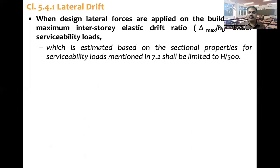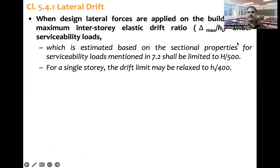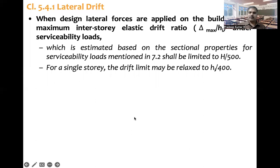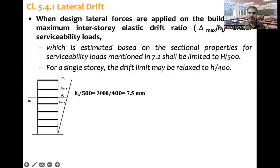Coming to the second part of the clause: for a single story, the drift limit may be relaxed to H-i by 400. Note that here it is drift, not drift ratio. So H-i divided by 400: 3000 divided by 400 equals 7.5 millimeters. So in one floor, a drift of 7.5 millimeters is allowed — H-i by 400.